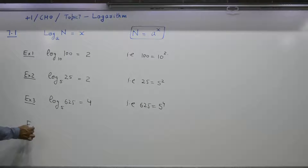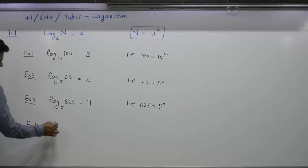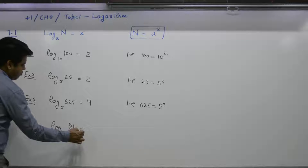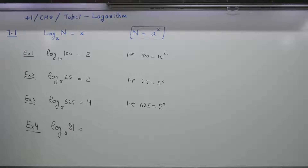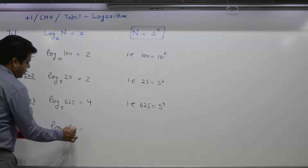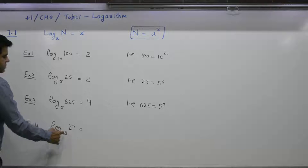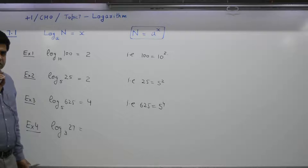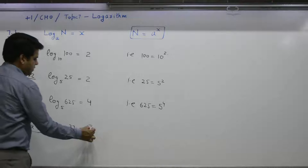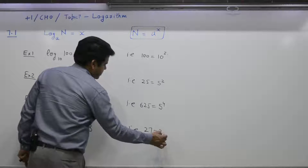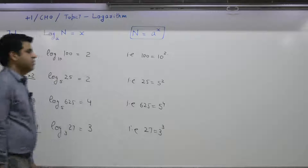Last example: Log of 27 to the base 3. 3 to the power 1 is 3, 3 to the power 2 is 9, 3 to the power 3 is 27. That is, 27 is equal to 3 to the power 3.